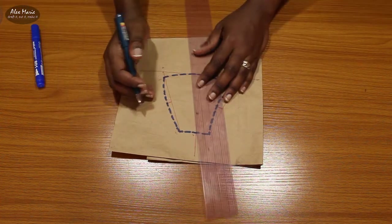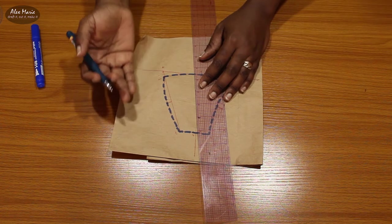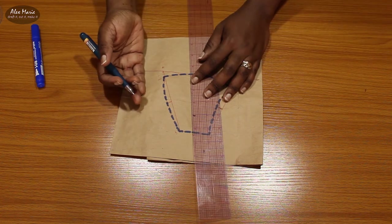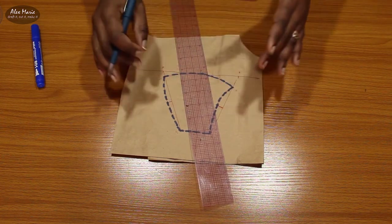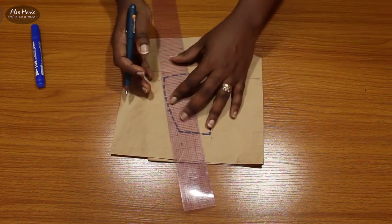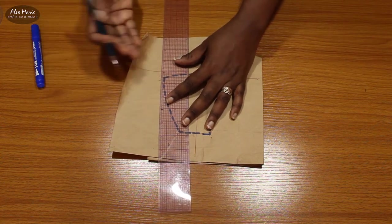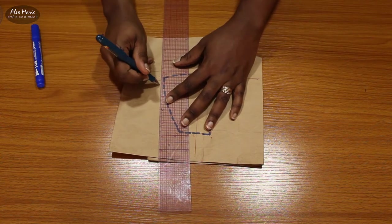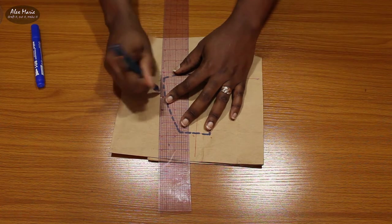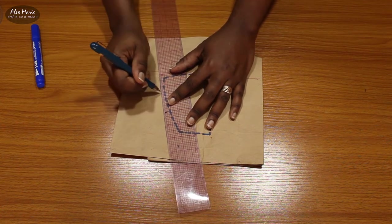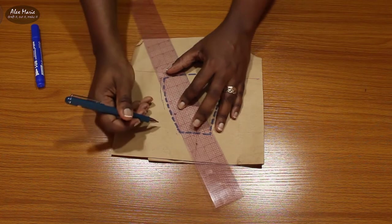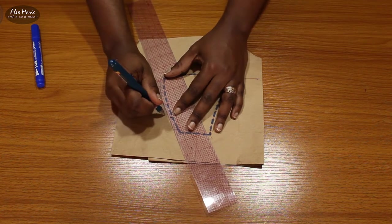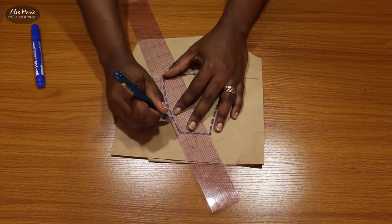For seam allowance I recommend about five millimeters or a quarter of an inch because it'll make it very small and be easy to hide. If you make a bigger seam allowance you might need to start trimming it down and all that, you don't want to waste fabric. So I'm just going to add about a quarter of an inch seam allowance all around my pattern.